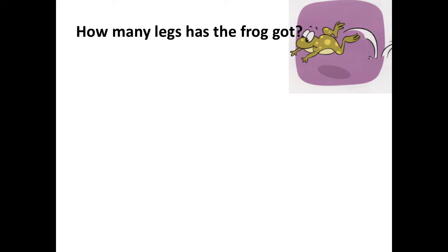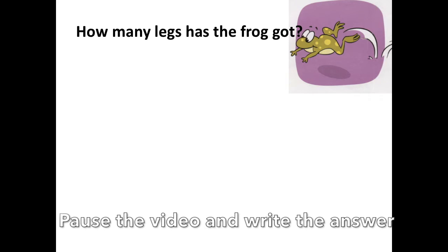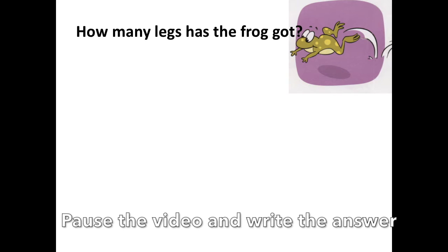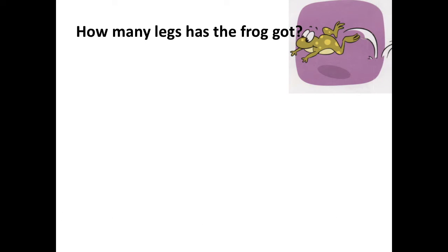How many legs has the frog got? Now let's check it. Where is the verb? Has got. Has is the auxiliary verb. Draw the line. Answer: The frog, all together, has got.